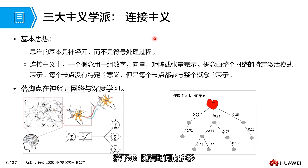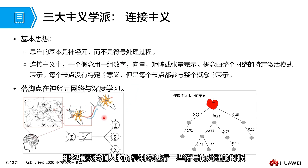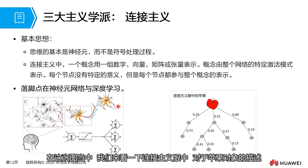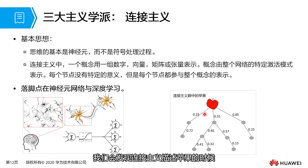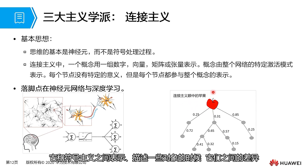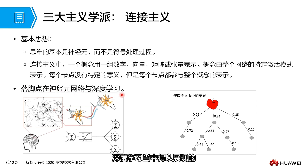Next is connectionism, whose core idea is that thinking is based on neurons rather than symbolic processing. Simulating the human brain, a neuron has a cell body with corresponding dendrites and axons that transmit signals. In the connectionist view, an apple is represented by various nodes — these nodes do not have specific individual meanings, but together with corresponding weights they ultimately represent the apple object. Connectionism is manifested in our neural networks and deep learning.